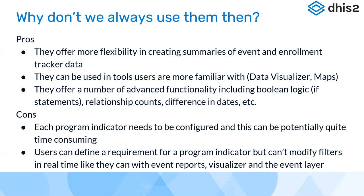There are some disadvantages as well. Each program indicator needs to be configured, which can be potentially time-consuming. For each combination — unlike in aggregate where category combos automatically handle combinations — for program indicators you have to configure each combination separately. The initial configuration can be complicated. Also, once a program indicator is defined, you can't modify its filters in real time the way you did yesterday with event reports. In event reports we could decide to filter data pertaining to a particular case ID just by inserting it into the filter, but this flexibility is not there with program indicators because they are pre-configured.